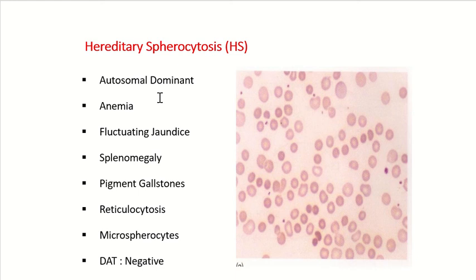In summary, hereditary spherocytosis is an autosomal dominant disorder in which patients present with anemia and fluctuating jaundice — the jaundice is due to increased production of unconjugated bilirubin. It leads to splenomegaly and pigmented gallstones. Patients have increased reticulocytosis, and on blood count, they show microspherocytosis, and the Coombs test will be negative.